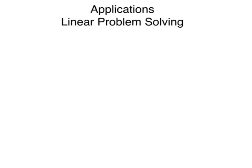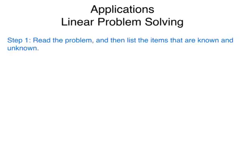Let's go over first the steps for problem solving. The first step in linear problem solving, or pretty much any problem solving, would be to read the problem first, and then list the items that are known and the items that are unknown. You can do this mentally sometimes, or if it helps you, you can physically write out what you know and what you don't know.